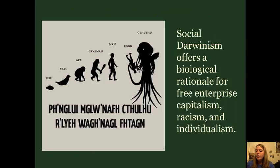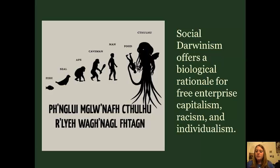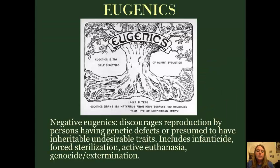Social Darwinism offers a biological rationale for capitalism, for racism, for individualism. It gives people the excuse to say these people are part of a species who are not as fit, therefore they shouldn't continue to exist.